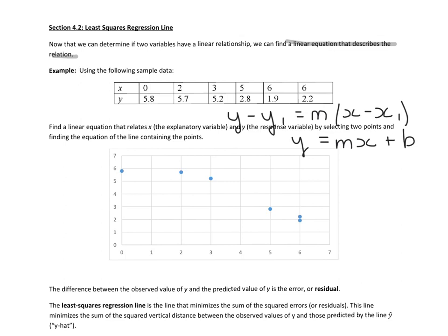We're going to take this bivariate data, and the scatter diagram has already been plotted. For instance, 0, 5.8, that's that ordered pair. 2, 5.7 is right there, et cetera, et cetera.